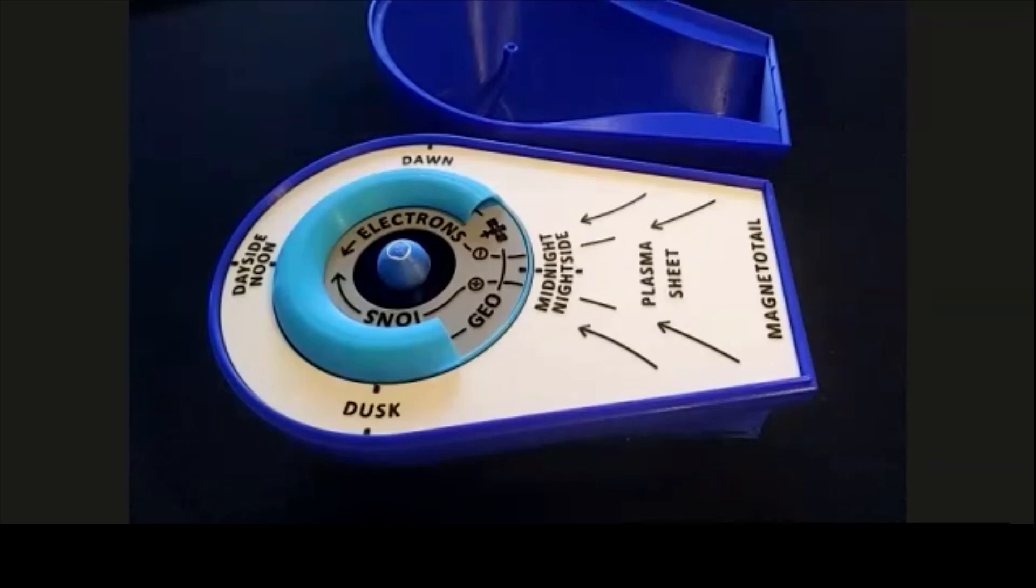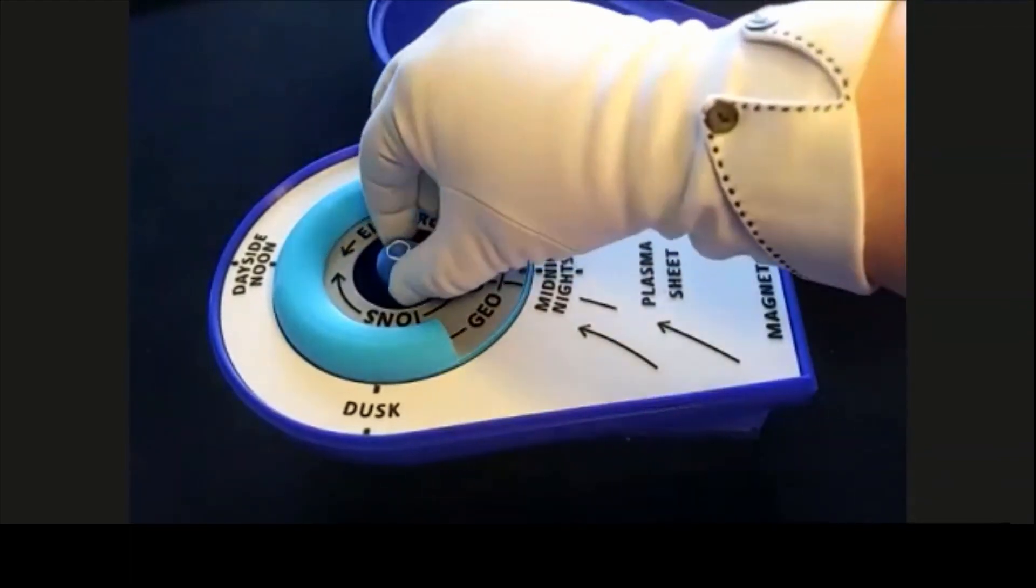There's also an inner radiation belt, but we didn't have space to include it in this version of the model. The outer radiation belt is so important for space weather, we wanted to be sure to include it. But what makes the magnetic field that pulls in all of these particles? Spoiler alert, it's deep within the Earth.